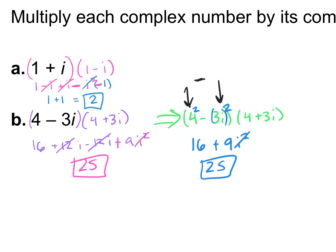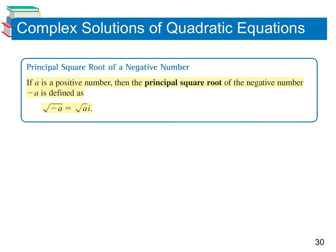Whenever we have a negative under our square root, we can always take it out of the square root and turn it into an i. This book puts the i behind the square root, but I always put it in front — like i square root a — so we can see that the i is not under the square root. Anytime you have a negative under the square root, take it out, move it to the front, and turn it into an i.